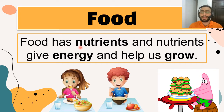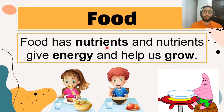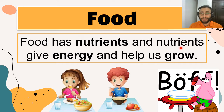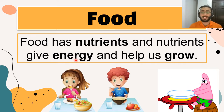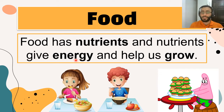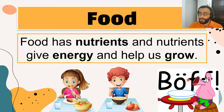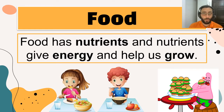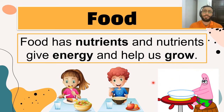Food has nutrients. What are nutrients? Nutrients are important things found in food. For example, fruits, vegetables, and meat have a lot of nutrients. Nutrients give us energy and help us grow. So when you eat food, you get nutrients, and those nutrients give you energy and help you grow. Look at Patrick here — he ate all the burgers because he wants to grow!